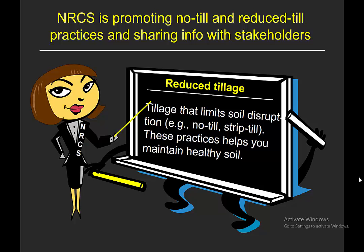NRCS is promoting reduced tillage and no tillage. The aim is that tillage systems that limit soil disruption — such as no-till and strip-till — should allow for healthier soil. Soil health and soil quality are not the same: soil quality refers to physical and chemical properties, while soil health is about organisms below the soil. Tillage is very disruptive to free-living nematodes and other soil organisms that recycle nutrients — it's like a natural disaster to them, like a hurricane and tsunami all in one.